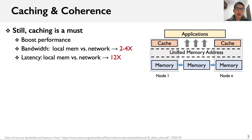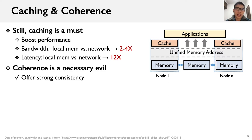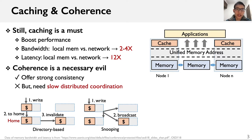Even with fast networks, caching is a must to boost the performance of DSM. This is because, compared with the network, local memory has much higher bandwidth and much lower latency. When different servers host the same cache blocks, we must keep them coherent to offer stronger consistency for upper applications. However, traditional coherence protocols such as directory-based and snooping protocols are slow, since they need expensive distributed coordination between servers.